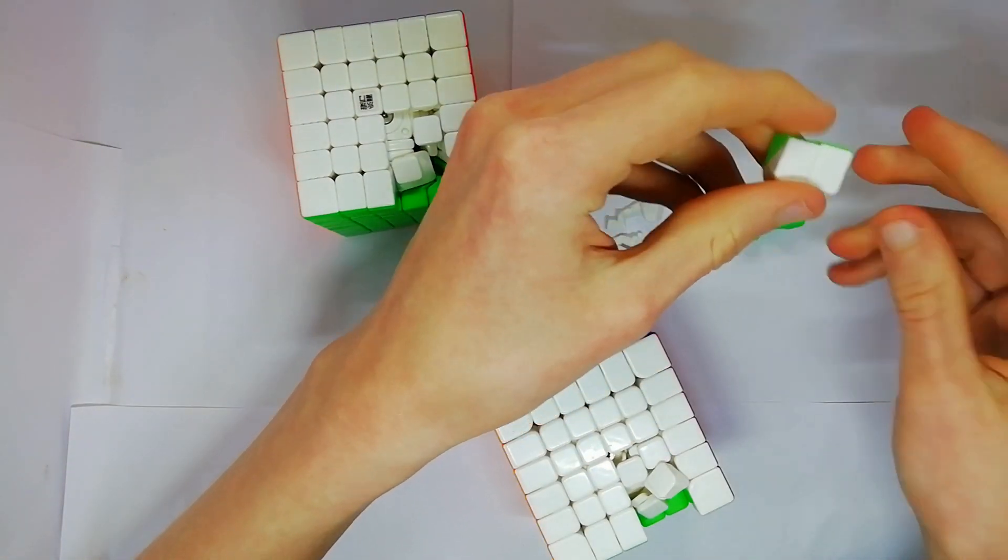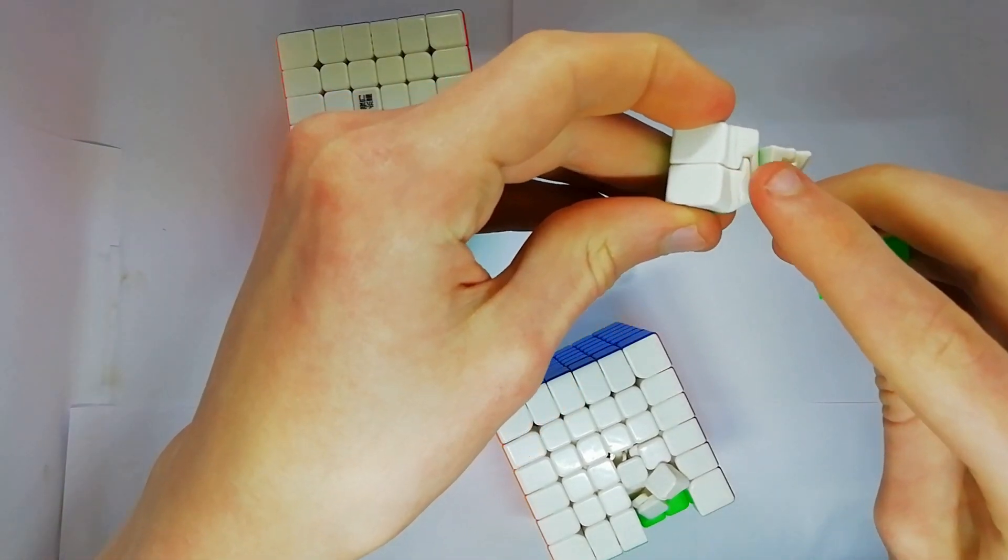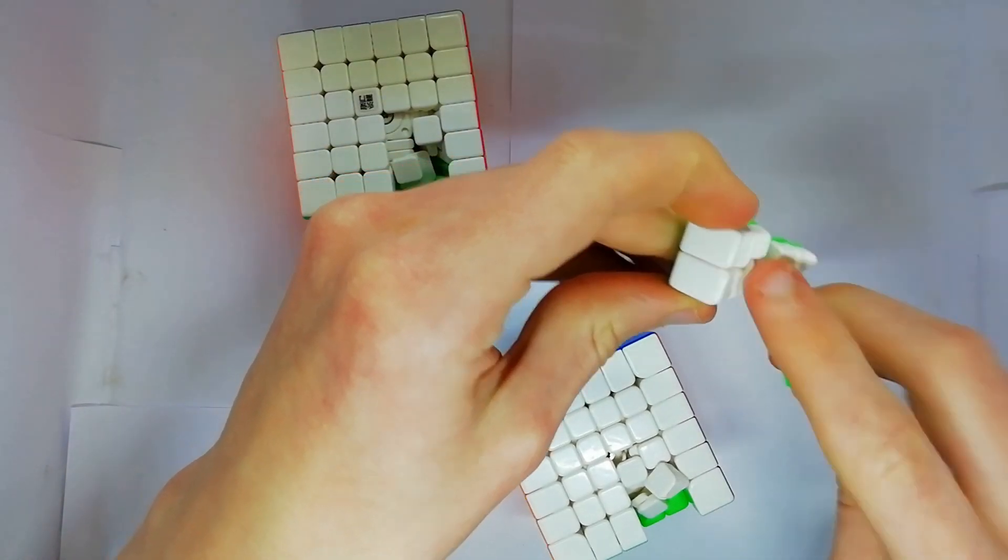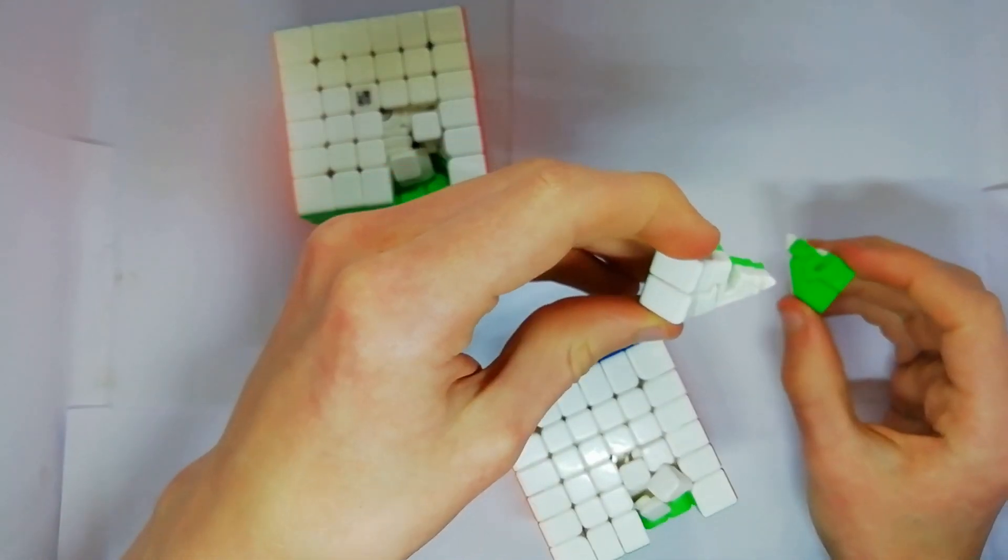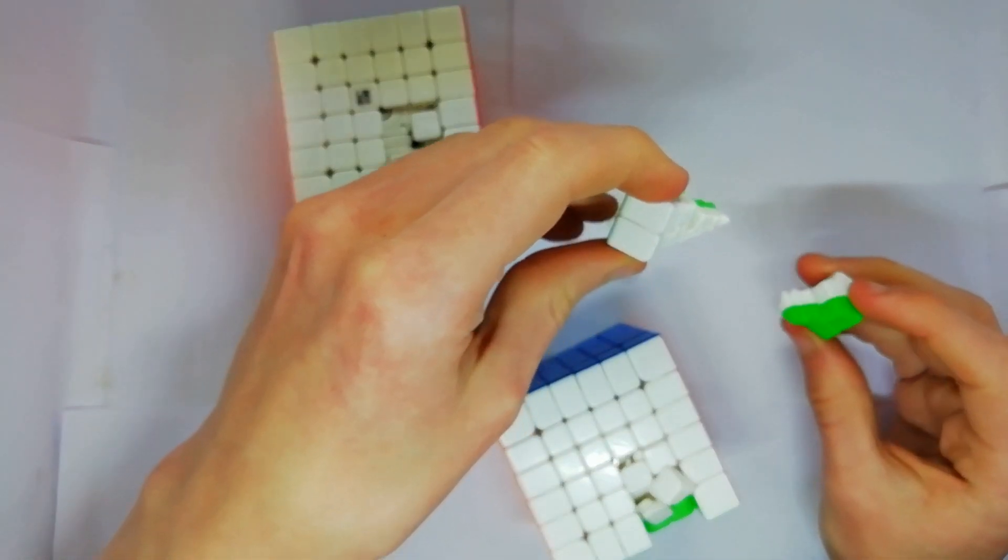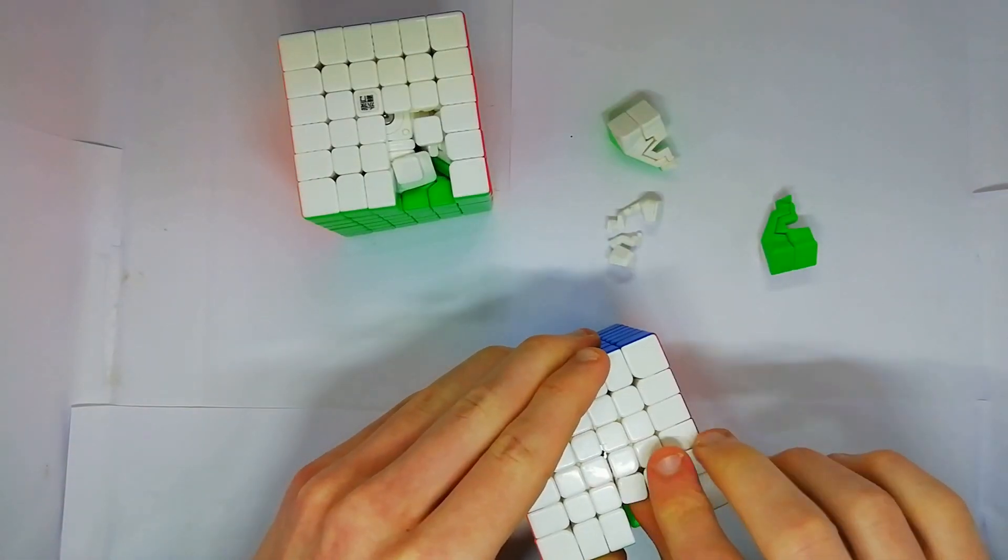But as you can see here they've got that cut there which I suspect increases the friction slightly but not too much to radically change it. But this simply doesn't have it and the Aoshi GTSM doesn't either.